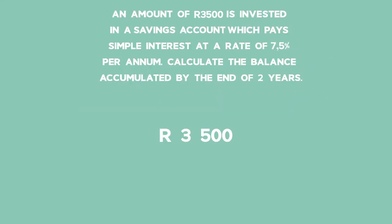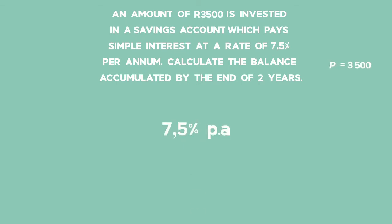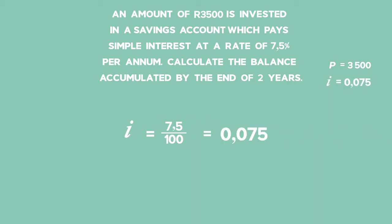If R3,500 is invested, this is the value of P. The account pays simple interest at a rate of 7.5% per annum. So that means I, your interest rate, is 7.5 divided by 100, which gives you 0.075.